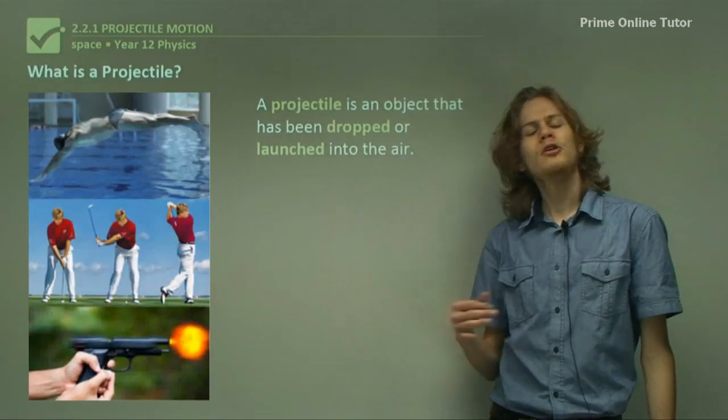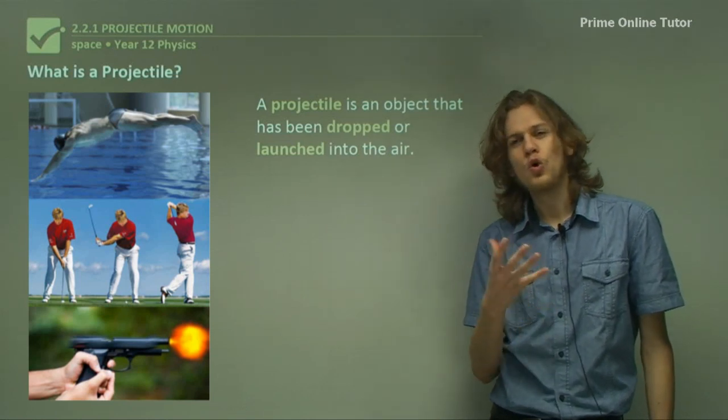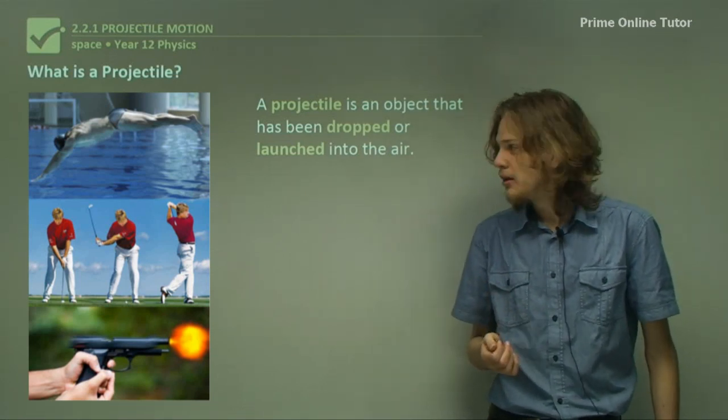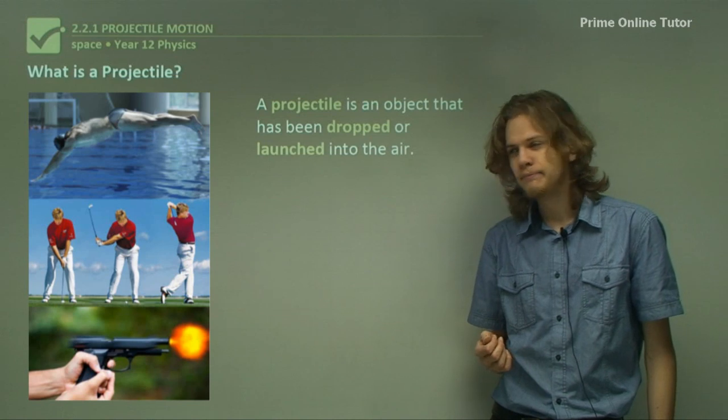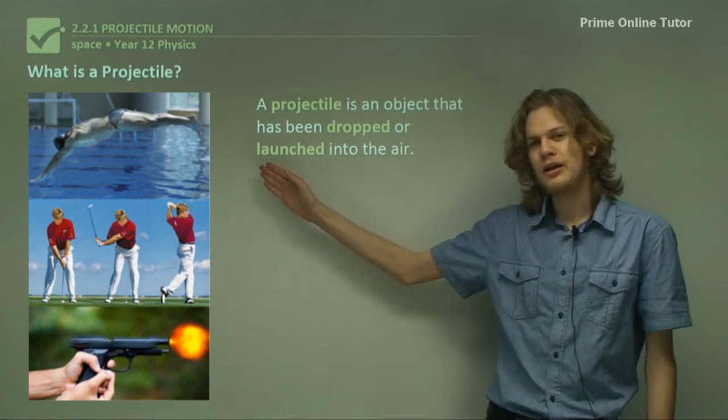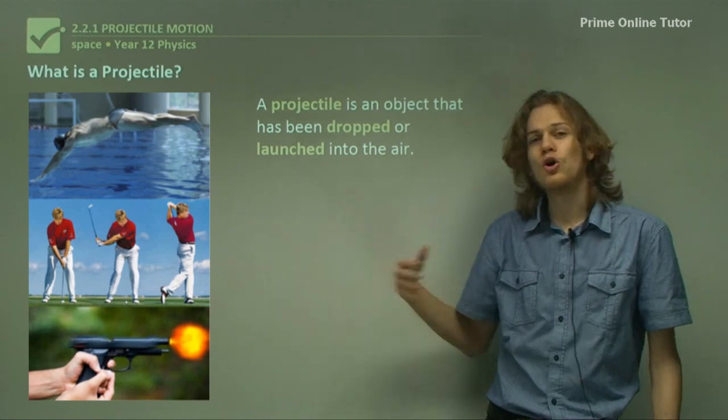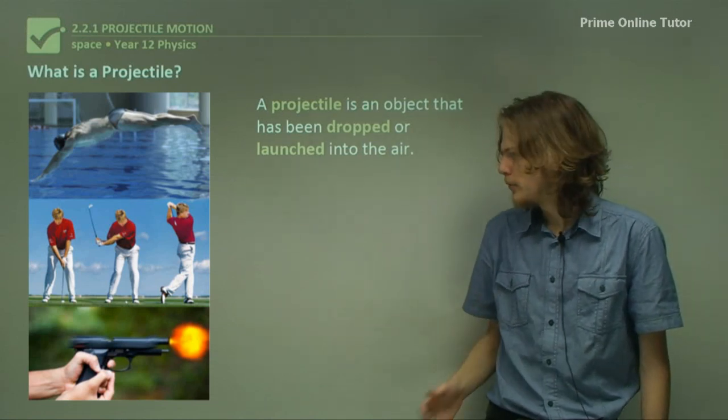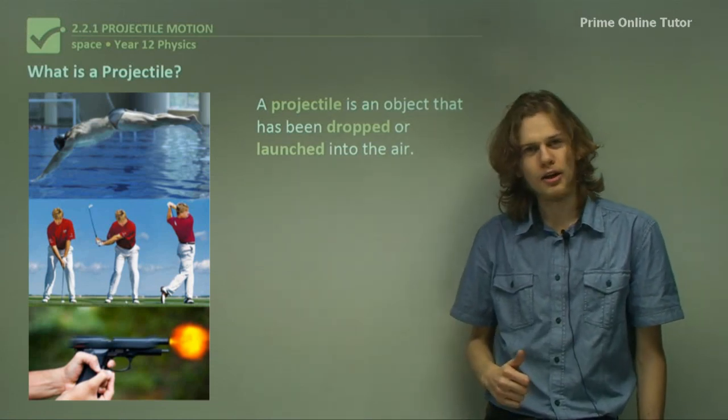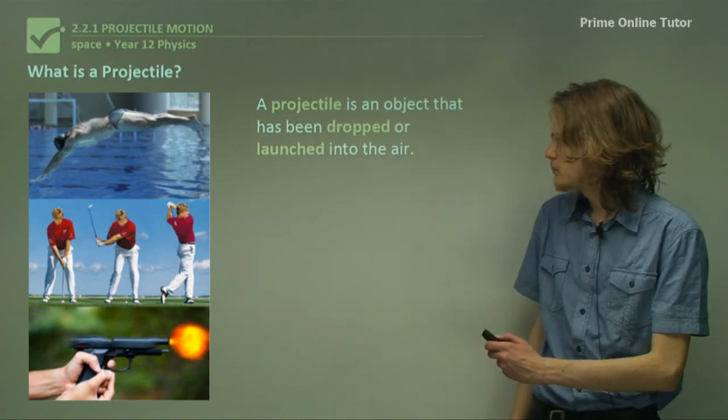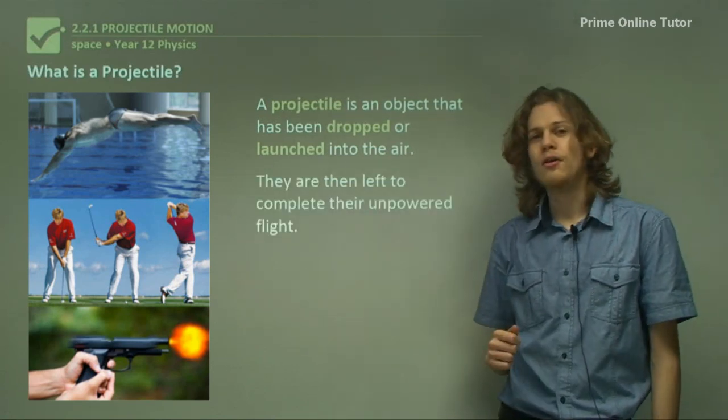A projectile is simply an object that has been dropped or launched into the air. We can see a few projectiles over here: a swimmer in midair about to dive into the water, a golf ball being hit by a golf club, or a bullet after being fired from a gun. They're then left to complete their unpowered flight.